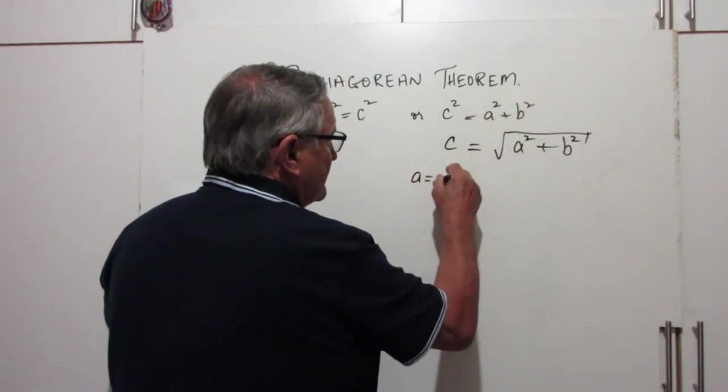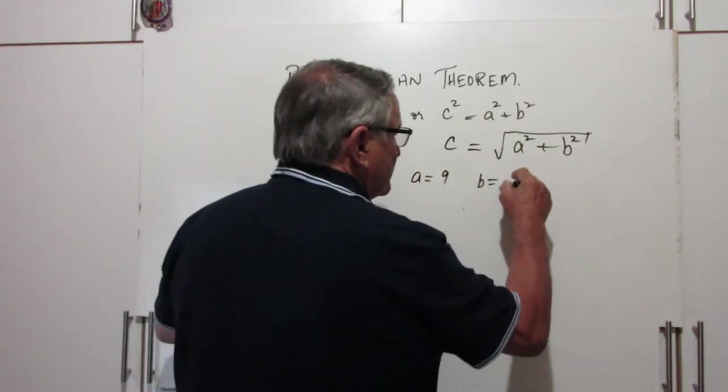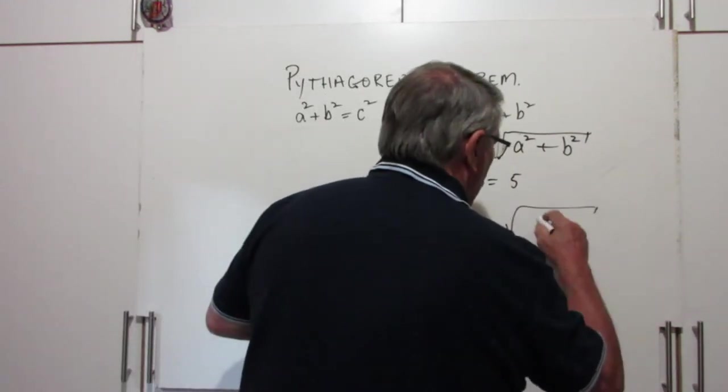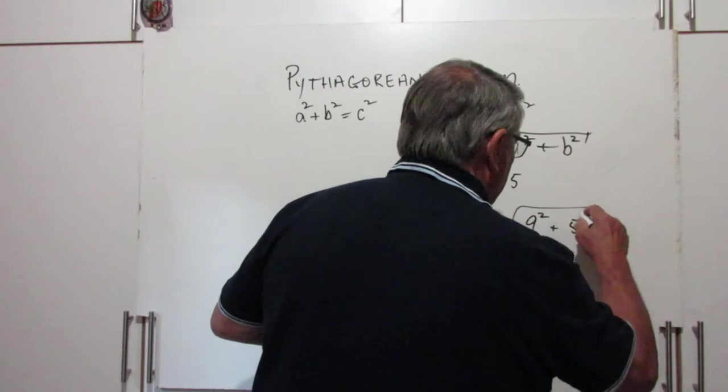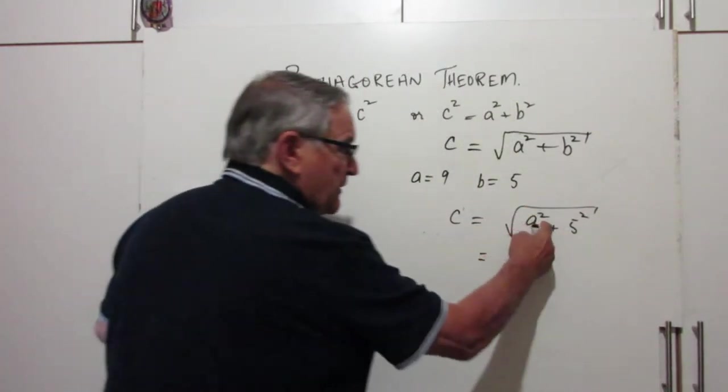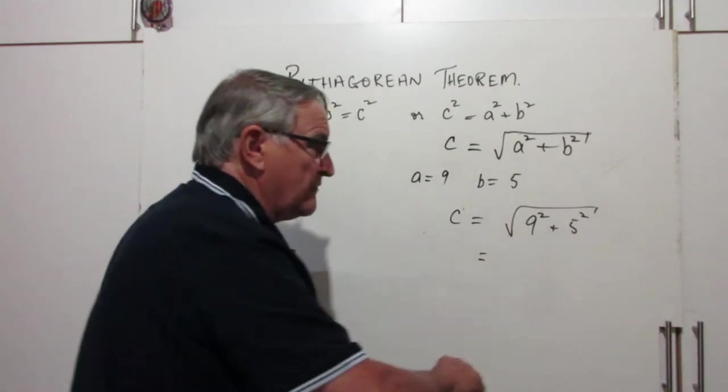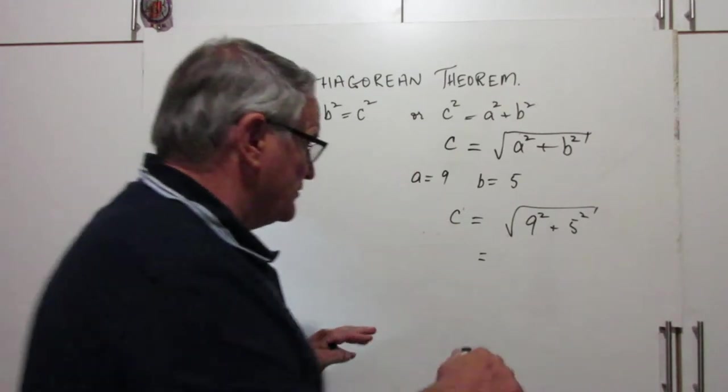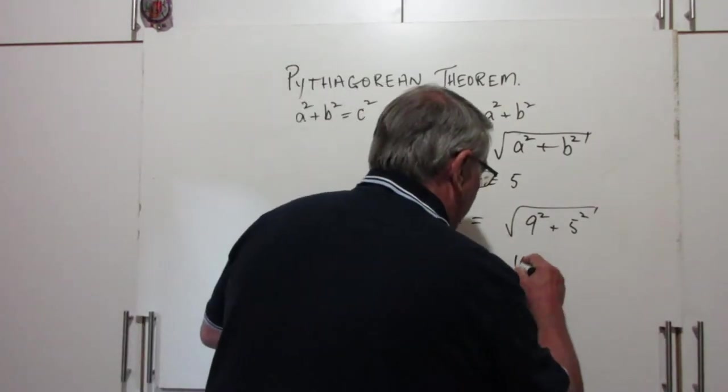If a is equal to 9 and b is equal to 5, then c is equal to the square root of 9² plus 5², and we can just put that straight into the calculator. 9² is 81, 5² is 25, 81 plus 25 is 106. The square root of 106 is a little bit more than 10, 10 point something.